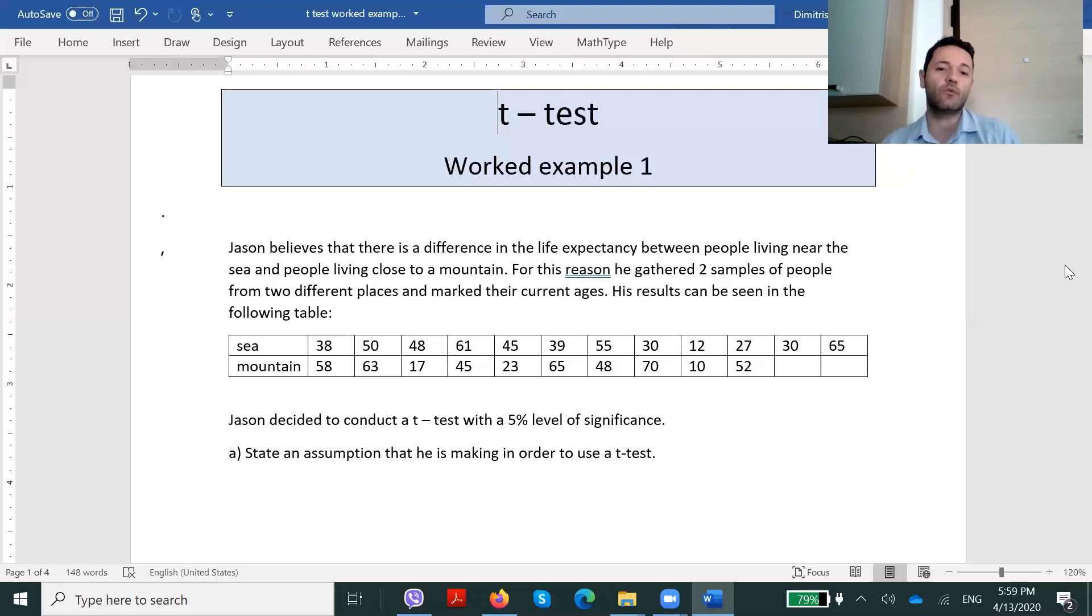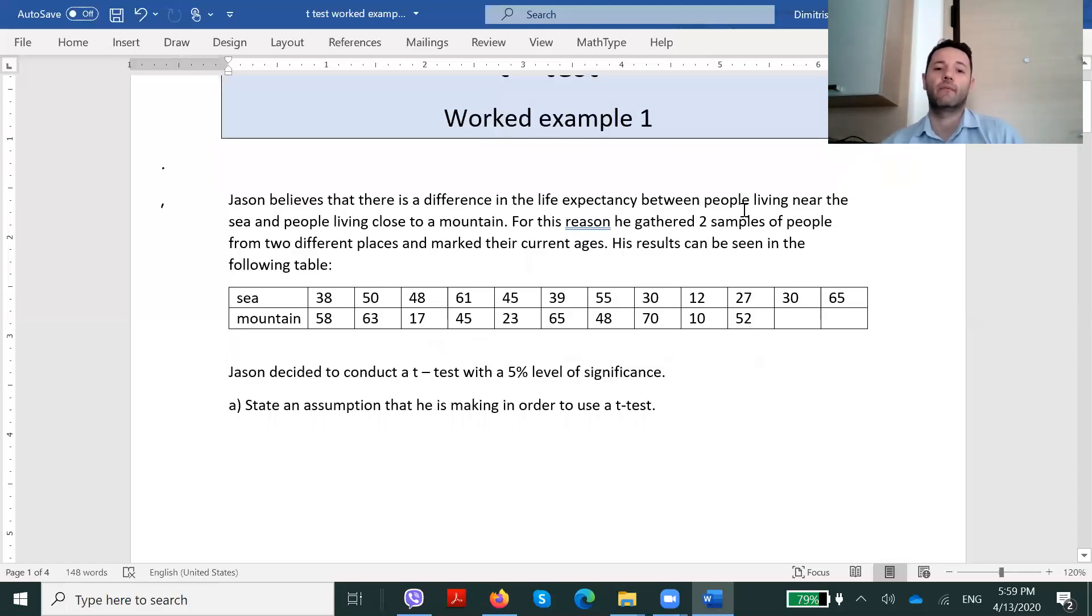Jason decided to conduct a t-test with a five percent level of significance. State an assumption that he is making in order to use a t-test. This will be a very common question in exercises with t-tests. And all we have to do is state that he is assuming that the two samples follow a normal distribution.